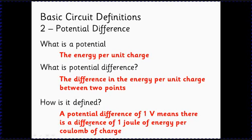So one volt means there's a difference of one joule of energy per coulomb of charge. This is an important definition of what a potential difference means: one volt means one joule of energy per coulomb of charge.